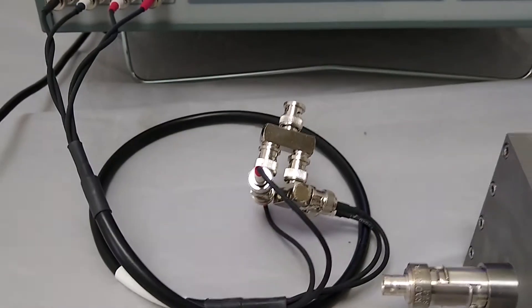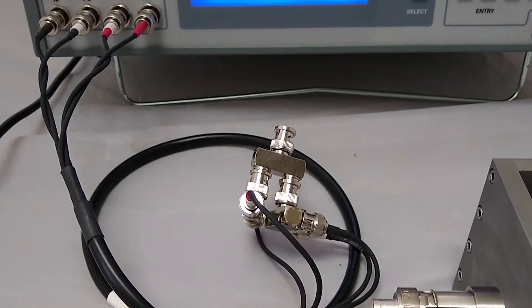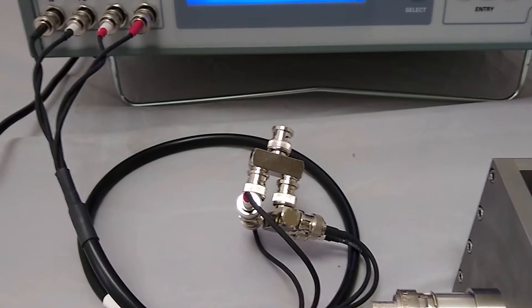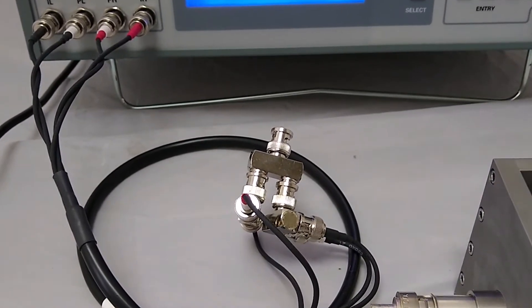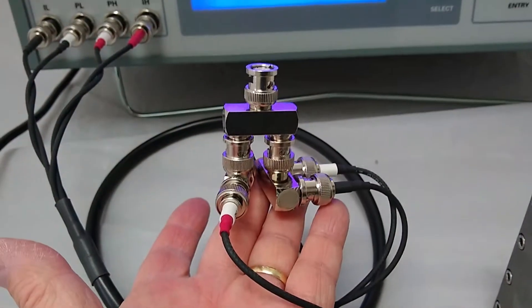Performing a short is not particularly important mainly because we're measuring low capacitance. So it's pretty much dominated by open. So in this particular case, I just removed the 874 and the BNC to banana adapters and just connected the two T's using another T. This allows them to be basically all connected for a short. Once we've done that, we can go over to the 7600 Plus.